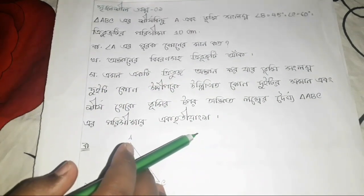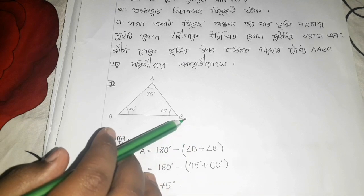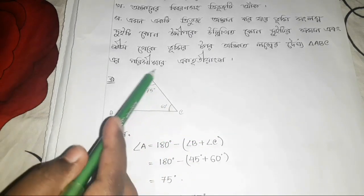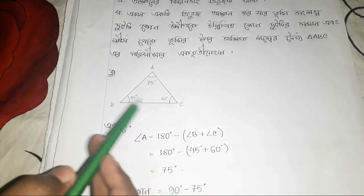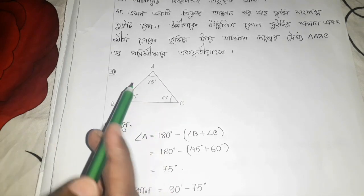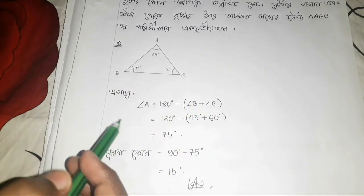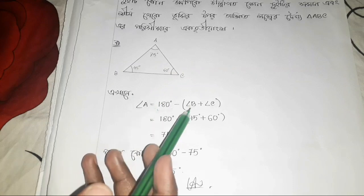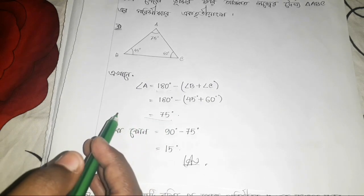So if A is equal to 5 cm, then A is equal to 3 cm. If A is equal to 5 cm, then A is equal to 6 cm. If B is equal to 45 degrees and C is equal to 60 degrees, if A is equal to 6 cm then A is equal to 2 cm. If A is equal to 3 cm, then A is equal to 180 degrees. So if A is equal to 180 degrees, minus A is equal to 6 cm. Then A is equal to 45 plus 60. So if A is equal to 180 degrees and C is equal to 75 degrees, then A is equal to 75 degrees.